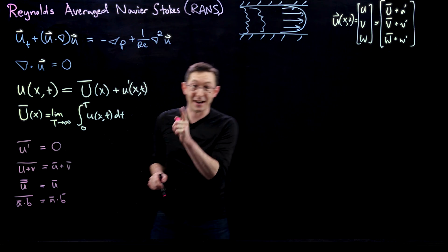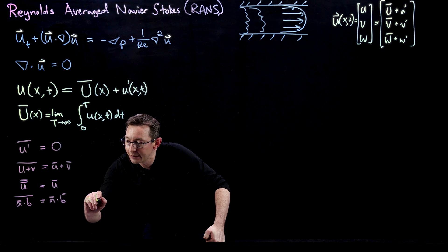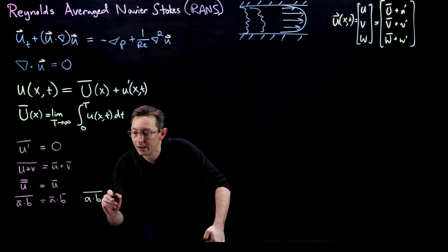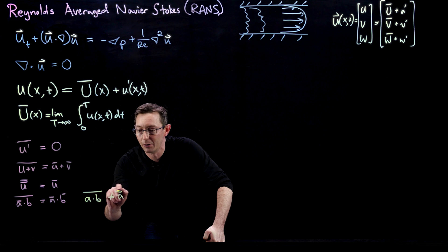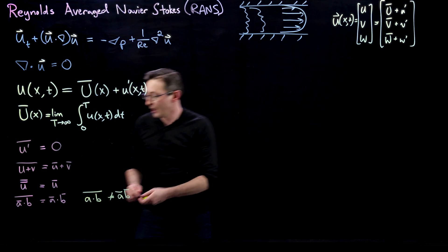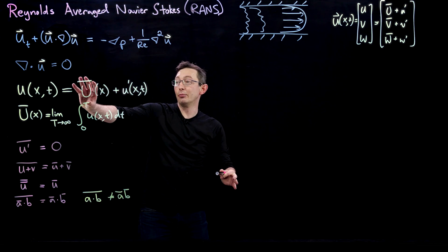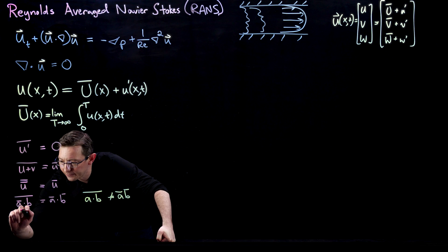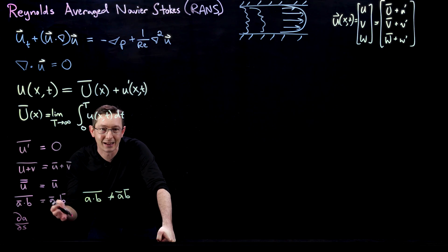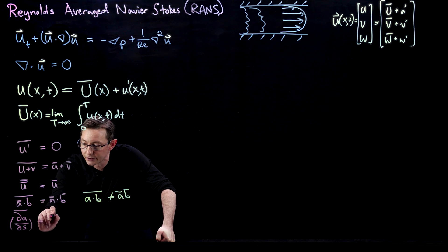Another property: the average of (ā · b) equals ā · b̄. But here's a critically important one that is NOT true: the average of (a · b) is NOT equal to ā · b̄. That's extremely important. Also extremely useful: if I take the partial derivative of a with respect to x, y, or z, and time-average that derivative, it equals the derivative of the time average with respect to that variable. Averaging commutes with differentiation.